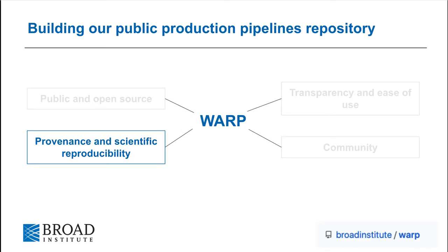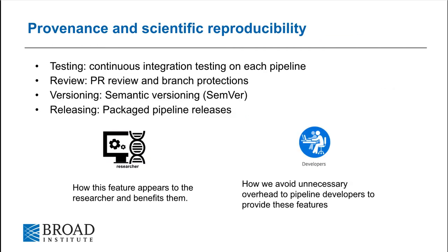Next, what we've done to enable clearer provenance and scientific reproducibility. It's important to us that our pipelines enable scientific reproducibility. So far, we have invested in a few areas that support this vision: pipeline testing and review, and versioning and releasing. Supporting these features can add significant overhead in pipeline development and maintenance. In the upcoming sections, I'll alternate explaining how these features appear to researchers and how we make supporting them sustainable for pipeline developers. I'll use these icons to clarify on each slide.